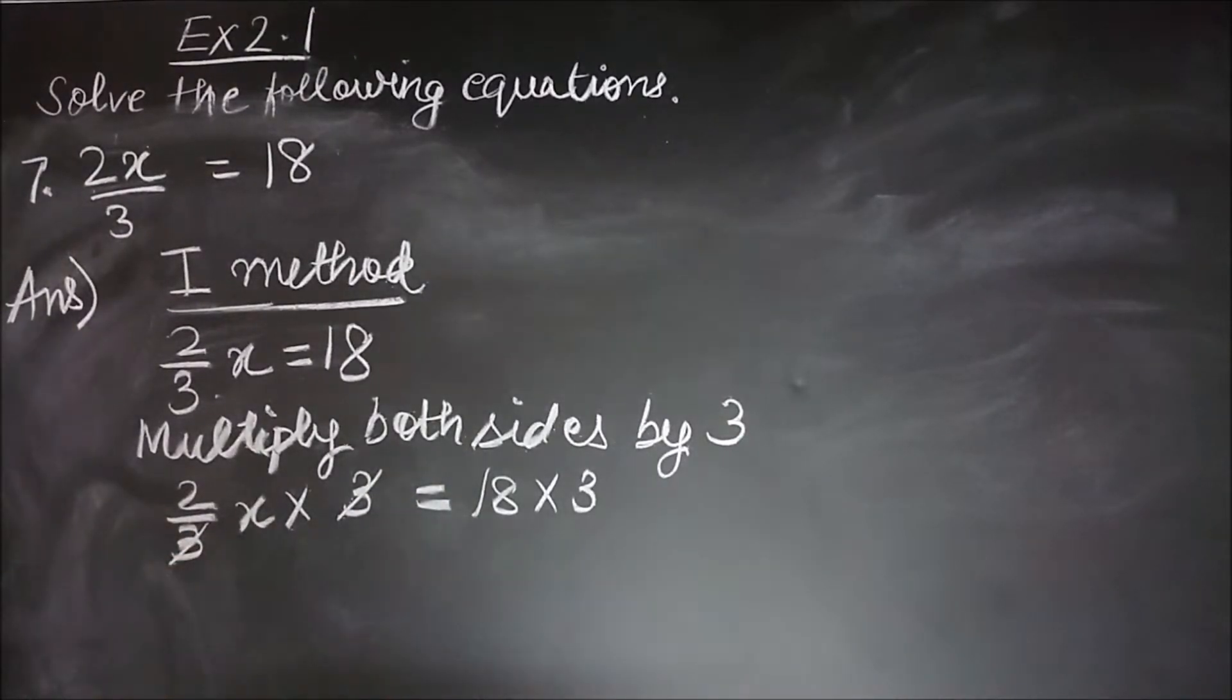3 and 3 will get cancelled. I will have 2x equal to 18 into 3 is 54.